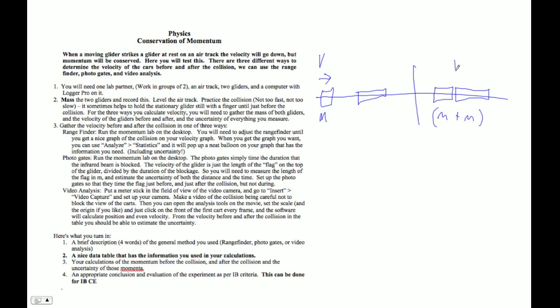And then we've got the velocity afterwards. So we ought to be able to figure out the momentum before P is mv. And then afterwards, momentum is m plus m times whatever that velocity is afterwards. So this will be more mass but less velocity.